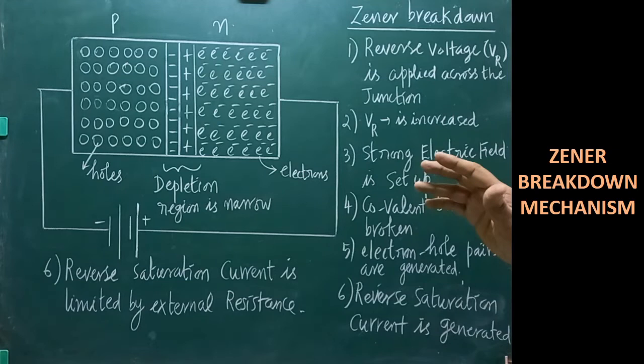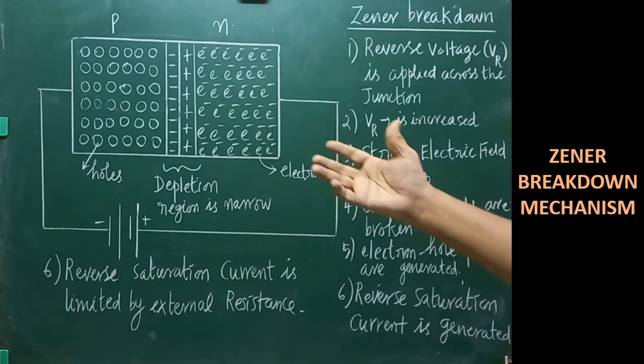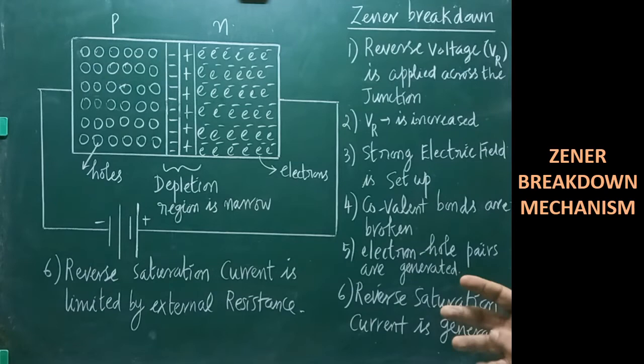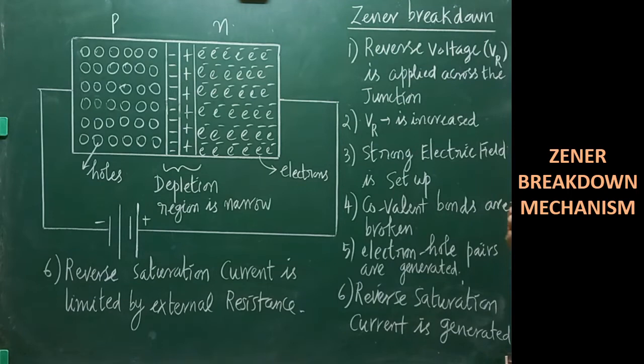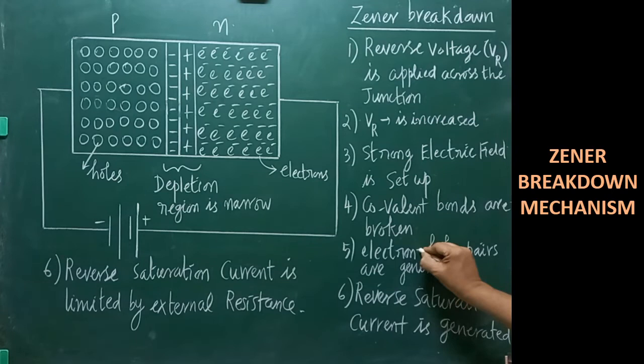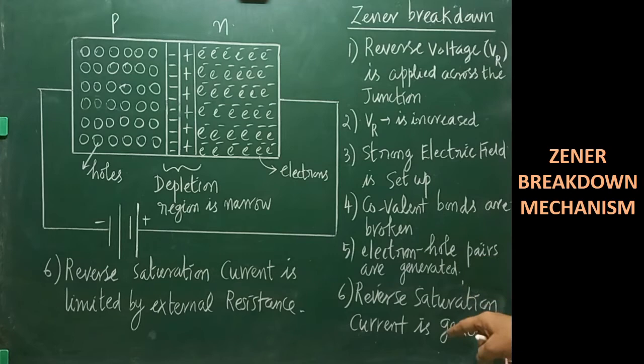As soon as the covalent bonds are broken, the electrons come out from the bondage, creating a vacancy called a hole. Therefore, electron-hole pairs will be created and generated. If more covalent bonds are broken, more electron-hole pairs will be generated. Because of the strong electric field, more covalent bonds are broken and more electron-hole pairs are generated.